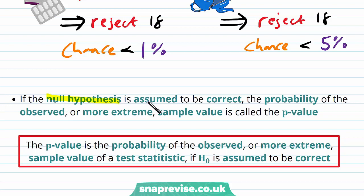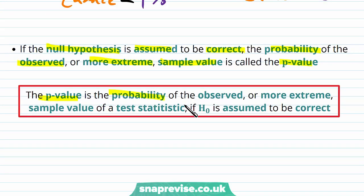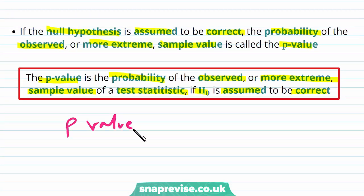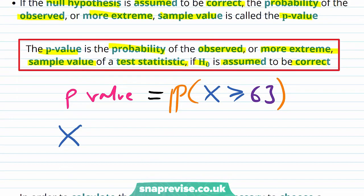If the null hypothesis is assumed to be correct, the probability of the observed or more extreme sample value is called the p-value. The p-value is the probability of the observed or more extreme sample value of a test statistic, if H0 is assumed to be correct. In our case the p-value is the probability that capital X is greater than or equal to 63, since this is our observed value. Capital X is the number of patients cured out of 100 — this is our test statistic.